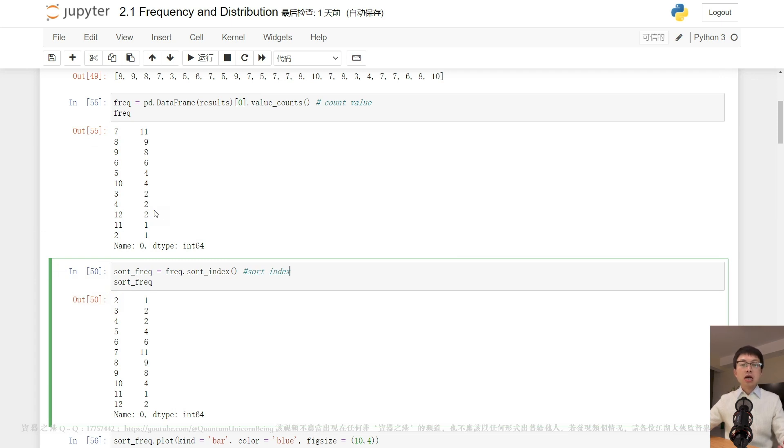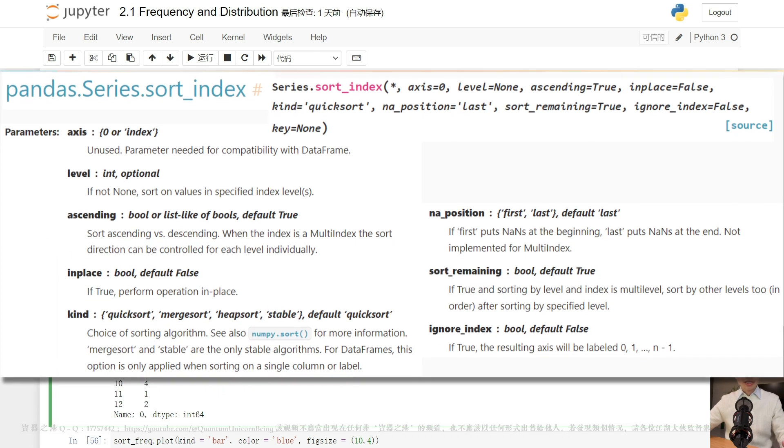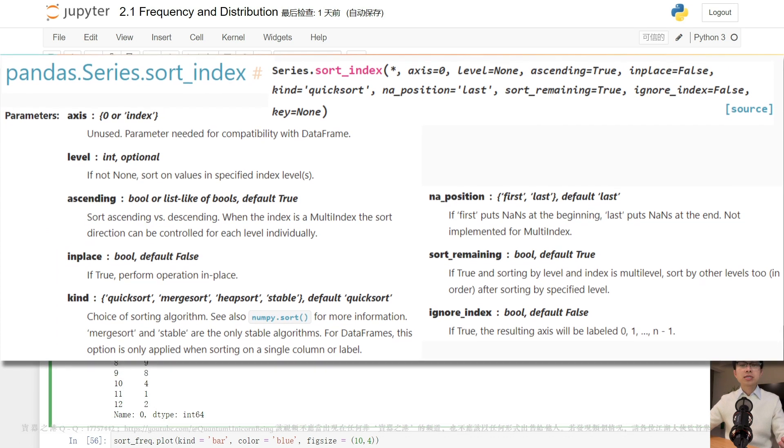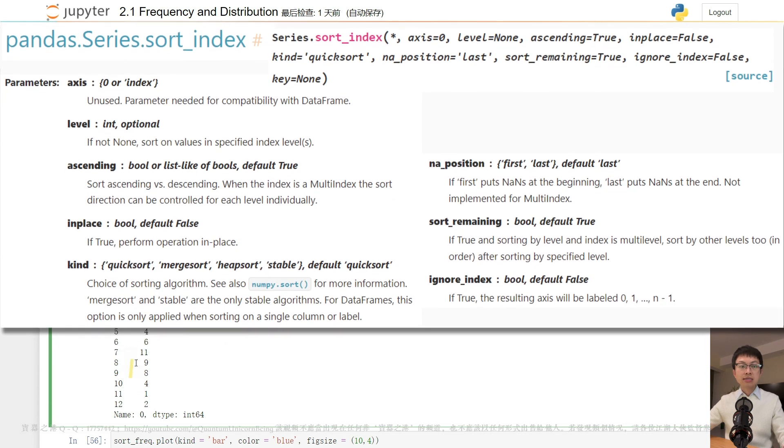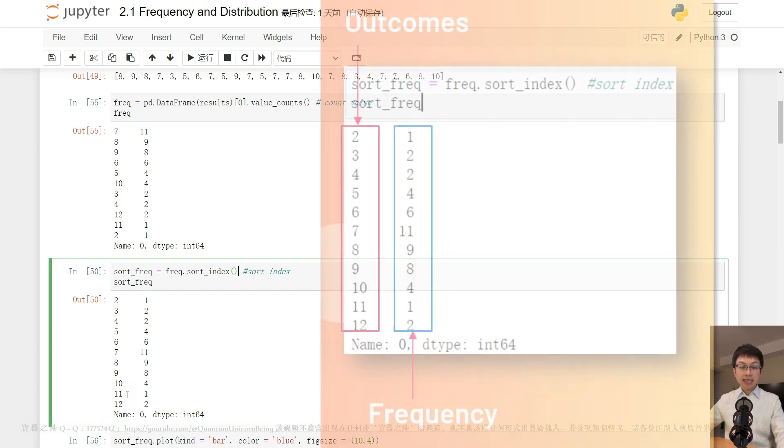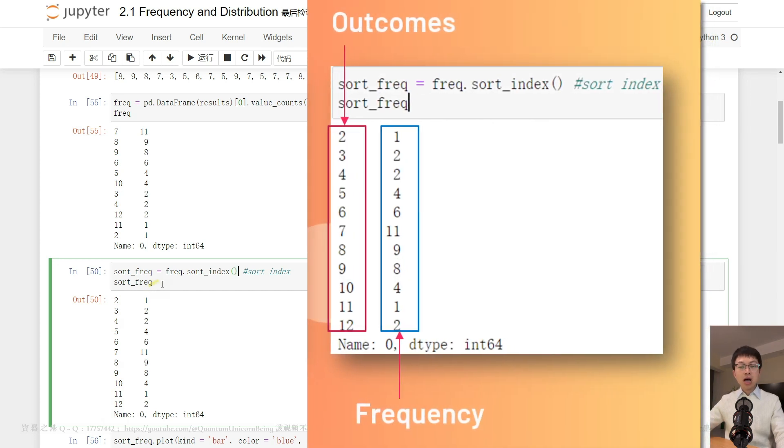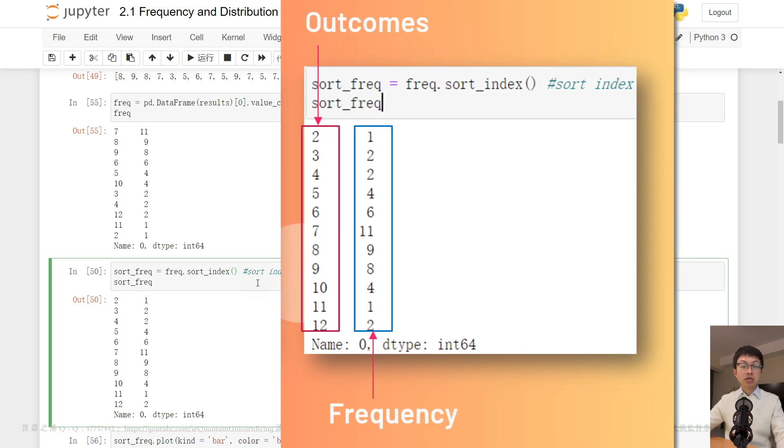Sorting this series according to the index using sort_index allows for easy analysis. Sort index will sort the result series by index labels. It returns a new series sorted by label if in-place argument is false. Otherwise, it updates the original series and returns none.